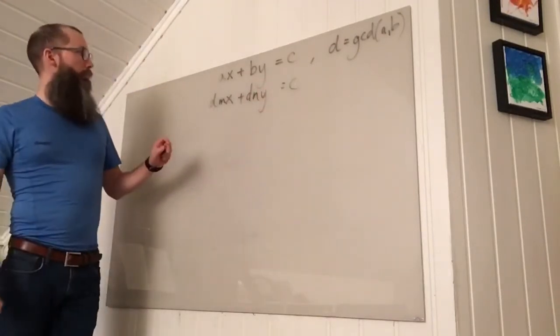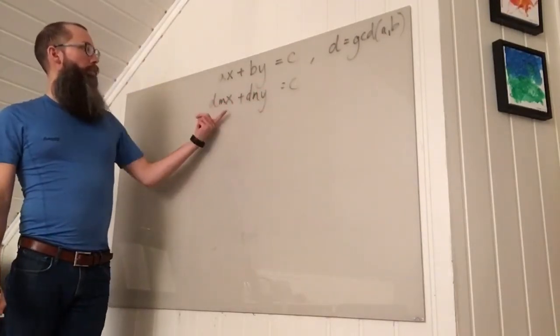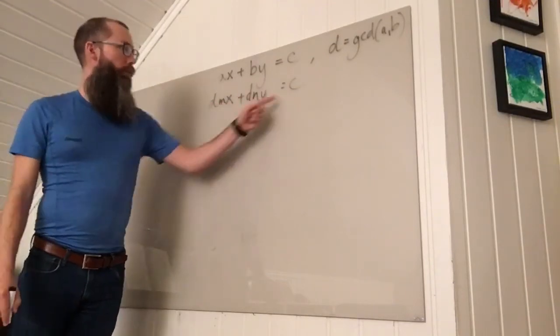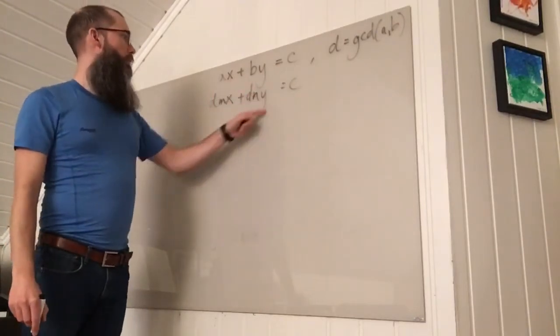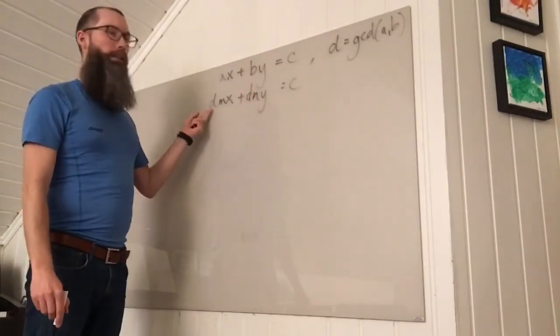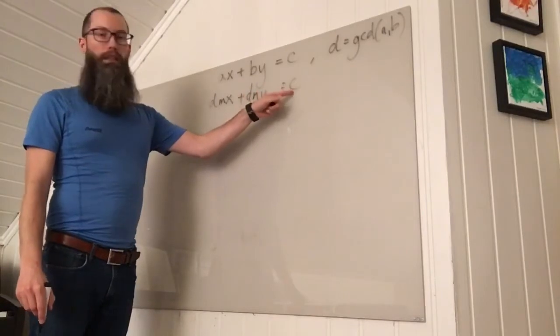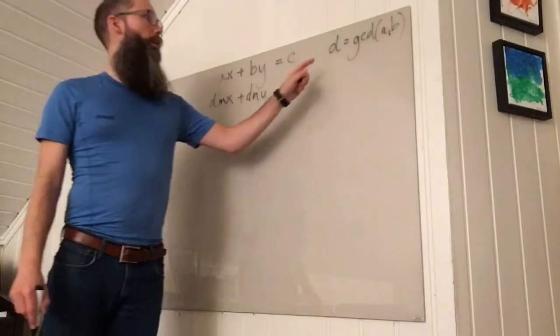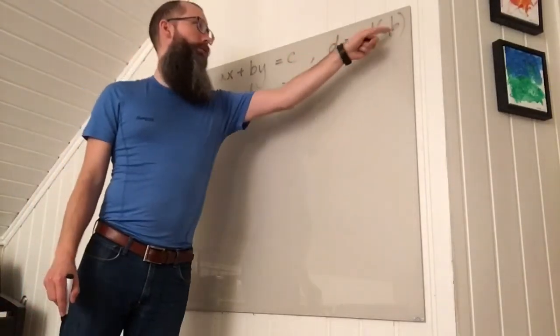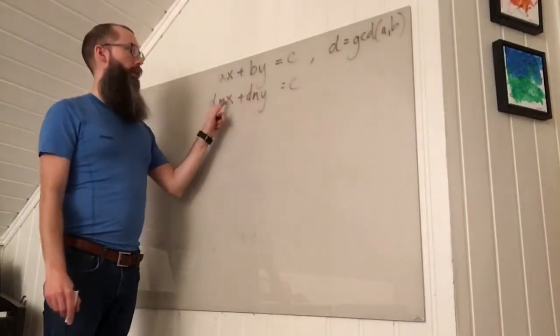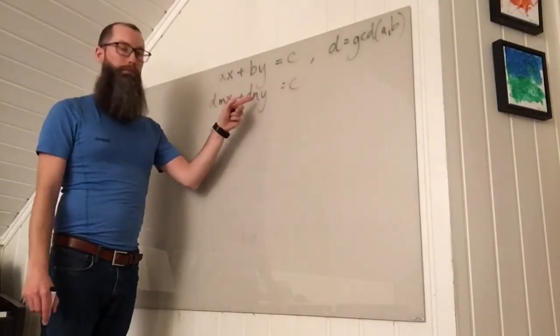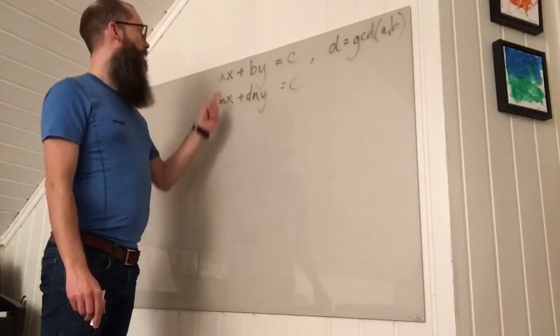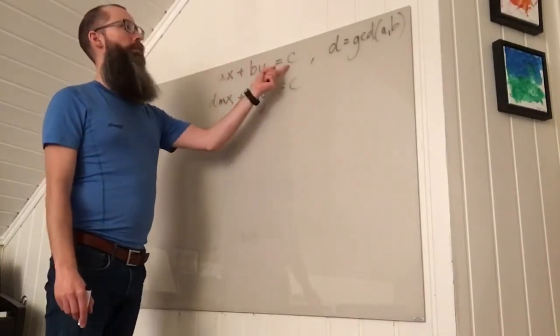So we see that D is a factor on the left side. So if there are integers X and Y solving the equation, then we have an integer on the left hand side divisible by D. So C has to be divisible by D as well. If C is not divisible by the greatest common divisor of A and B, then this cannot be true for any integers X and Y. So we see that a requirement is that the greatest common divisor of A and B has to divide C.